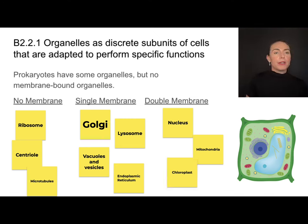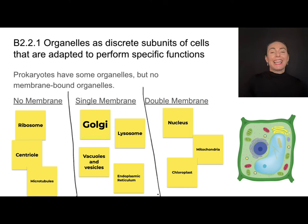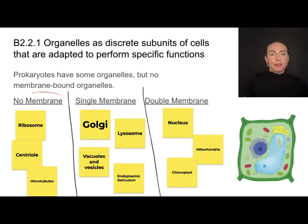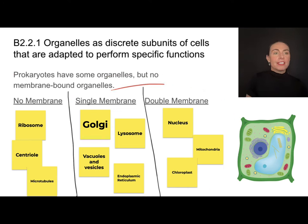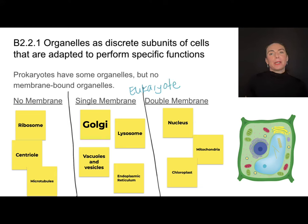It's important to understand which organelles are going to have different numbers of membranes. Non-membrane-bound organelles can be found in prokaryotes, but anything that has a membrane-bound organelle must only be found in eukaryotic cells.